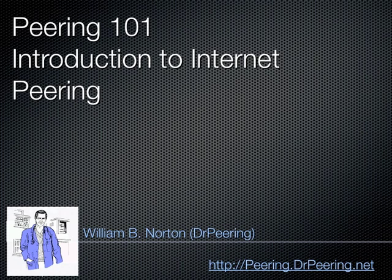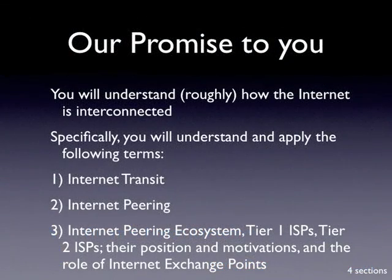The internet, of course, is a network of networks, and internet peering is one method ISPs use to interconnect their networks together on the internet. We have assembled a wealth of information at the Dr. Peering website, all freely available at peering.drpeering.net, and we will share some of that information here today. In the next 15 minutes you will have a sense of how the internet is interconnected, and have a working knowledge of the terms internet peering, internet transit, and how this whole thing can be viewed within the paradigm of a global ecosystem — a set of internet peering ecosystems.